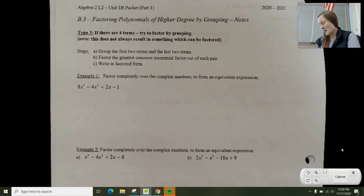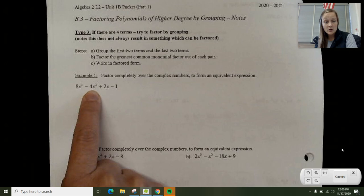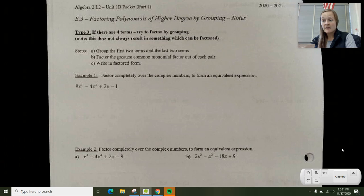Notice in this first example - I'm on page 10, by the way - I have 8x³ - 4x² + 2x - 1. So I already have it in four terms.